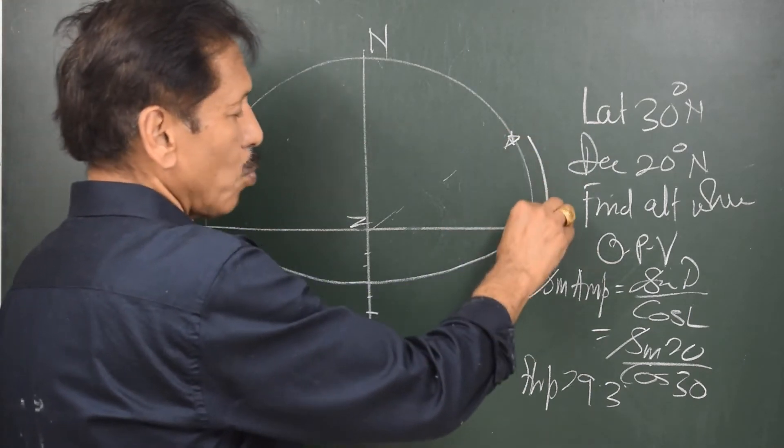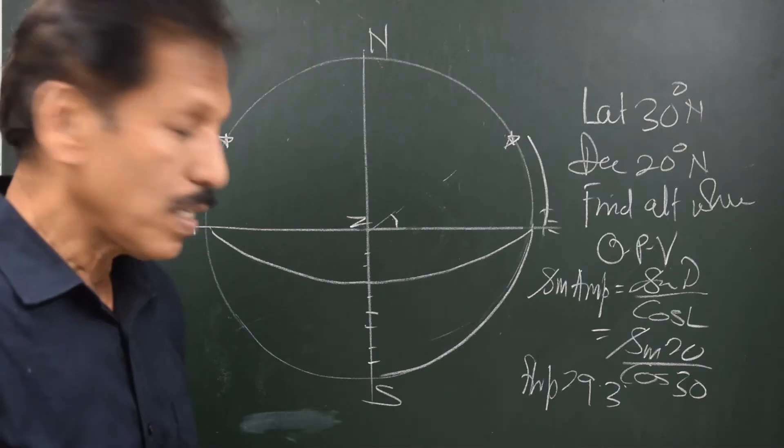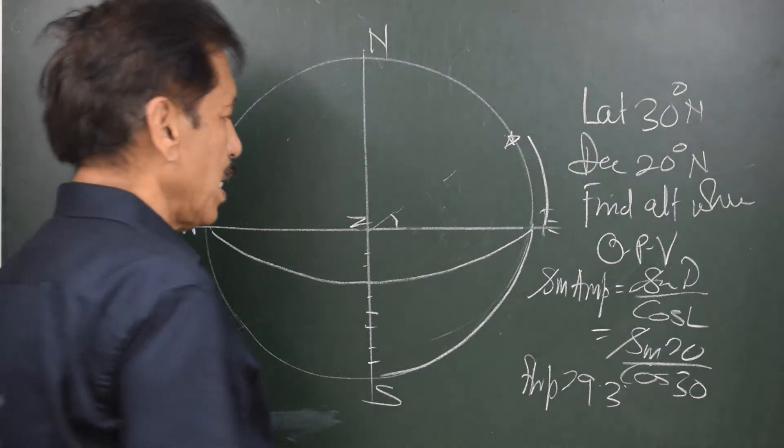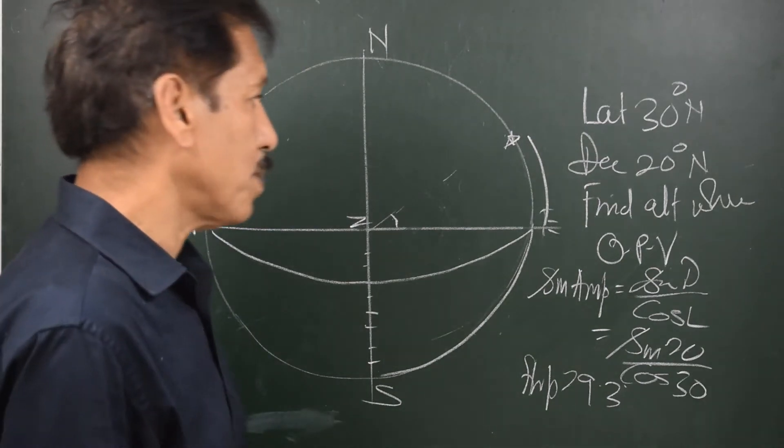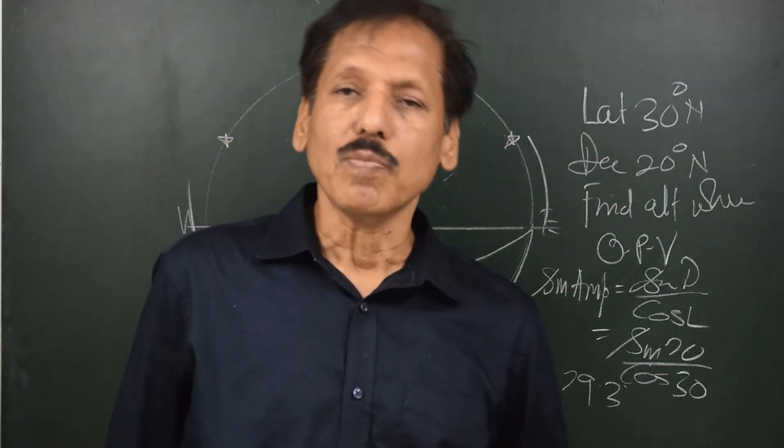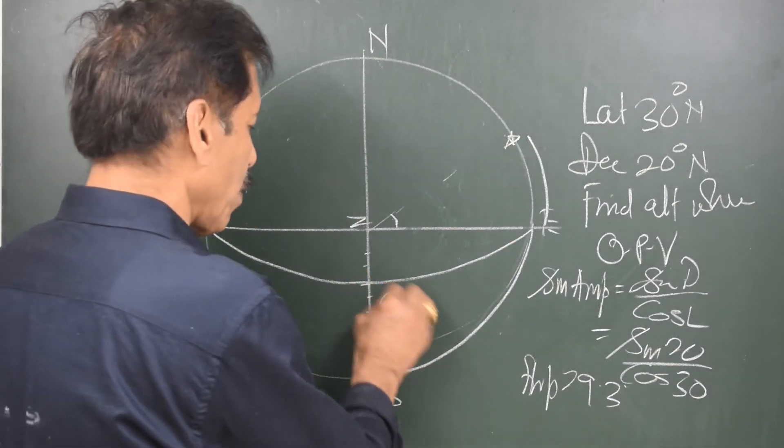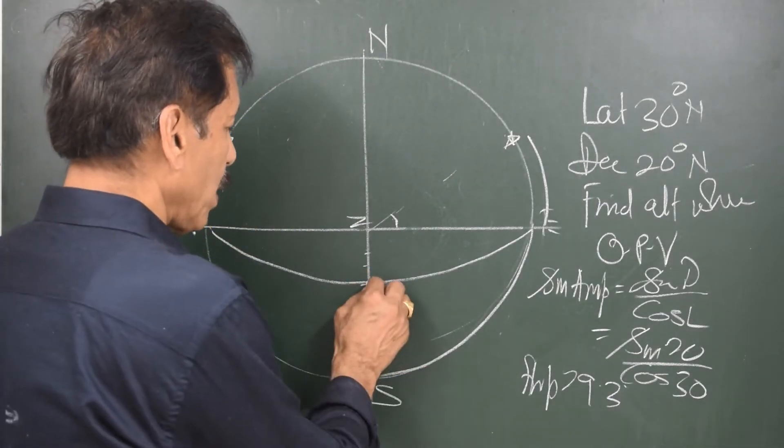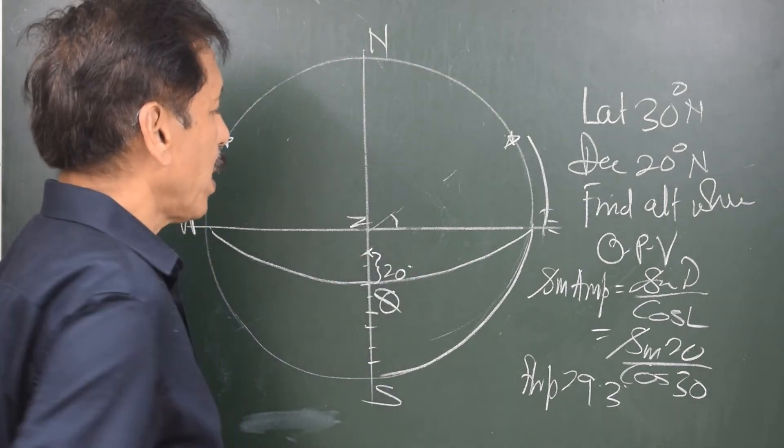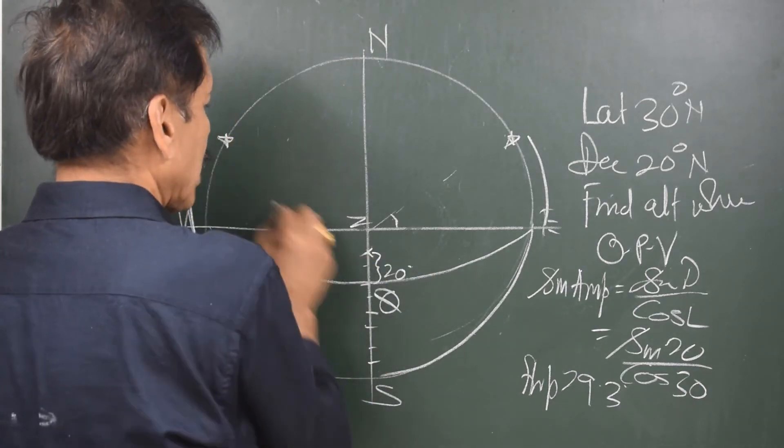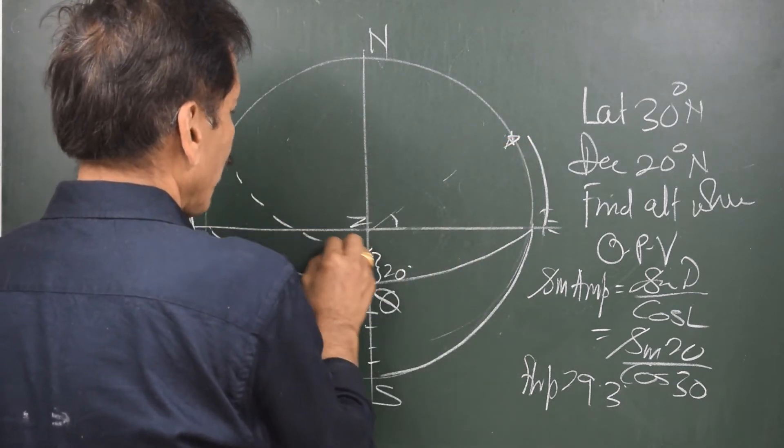Now, this particular angle is 29.3 which is the amplitude and this angle is also amplitude 29.3 degrees. But, because the declination is 20 degrees north, declination is measured from the equinoctial and on the meridian. Declination is measured from the equinoctial and on the meridian. That means from here, 20 degrees upwards is this position.